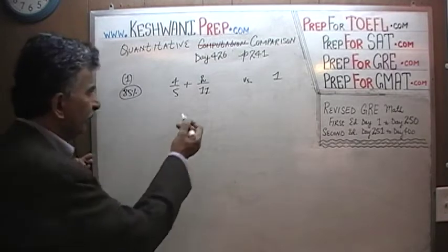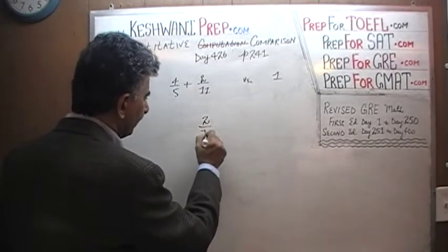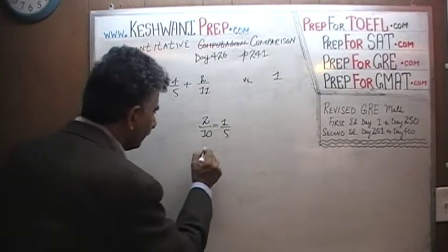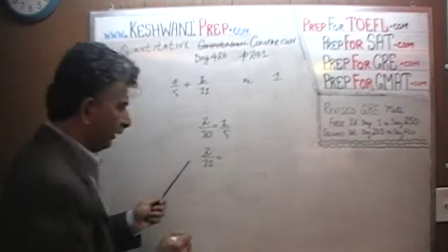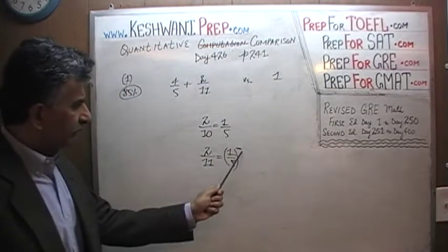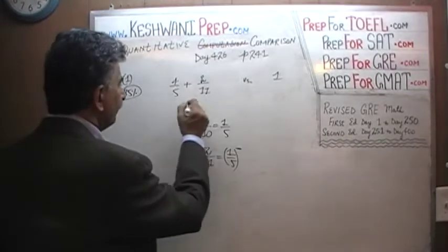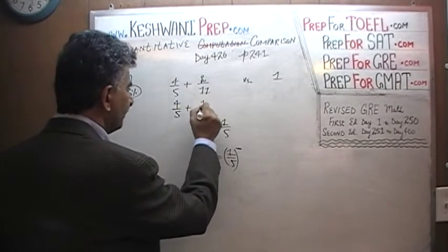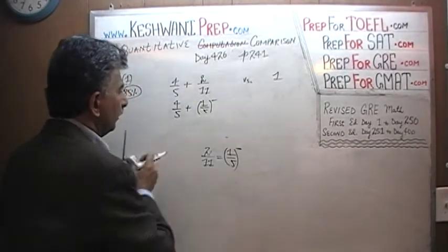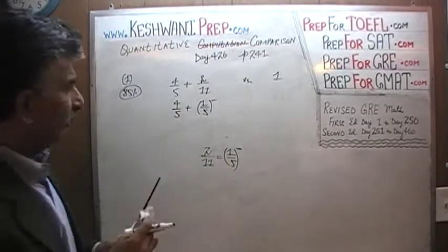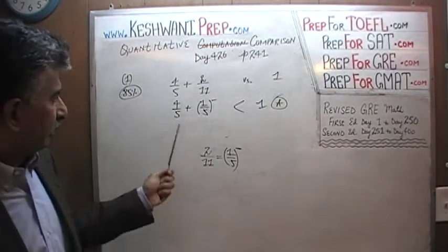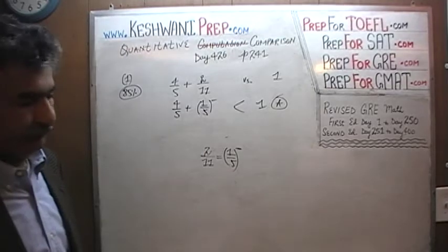The intuitive way to look at this problem is to understand that 2/10 is the same as 1/5. Therefore, 2/11 — whatever it is — has got to be just a little under 1/5, something less than 1/5. So we have 4/5 plus another quantity which is just a little under 1/5. Since 4/5 plus 1/5 equals 1, then 4/5 plus something less than 1/5 is going to be less than 1. The answer is A.